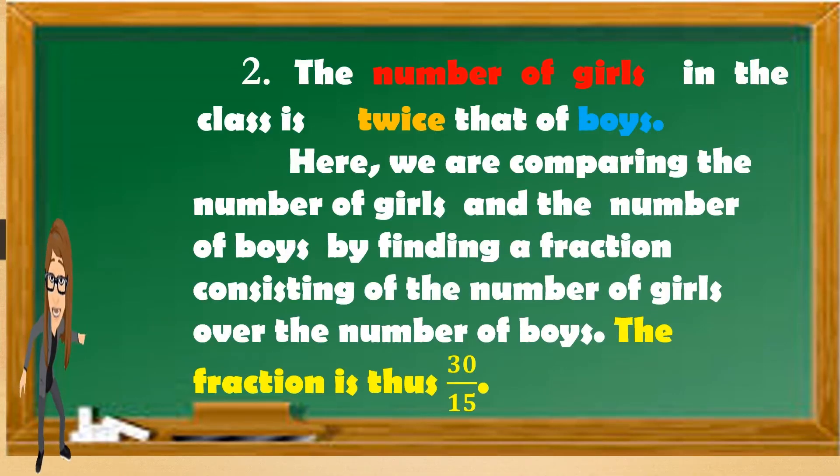Now let's go to number 2. The number of girls in the class is twice that of the boys. Here we are comparing the number of girls and the number of boys by finding the fraction consisting of the number of girls over the number of boys. So the fraction is 30 over 15.